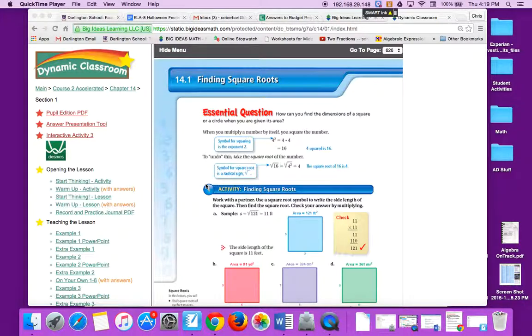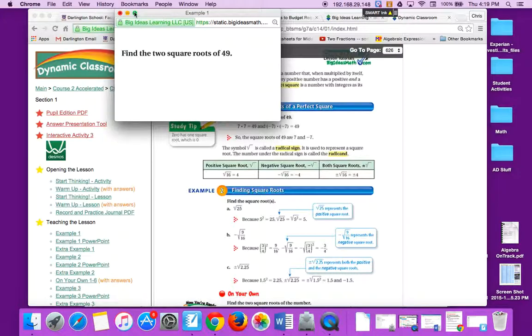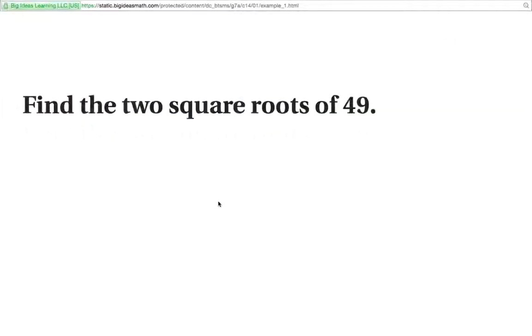All right, this video is all about finding square roots. I know some of y'all might have already heard this stuff already, but I want to make sure I did another video lesson just in case you need to go back and look at something. All right, so square roots. The first thing we're going to look at is example one again. I know some of y'all have already seen this. Find the two square roots of 49.